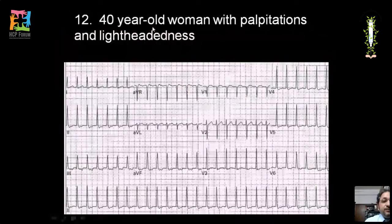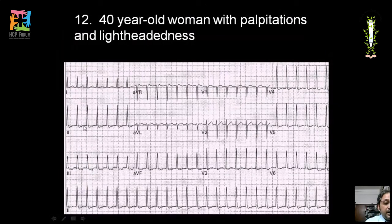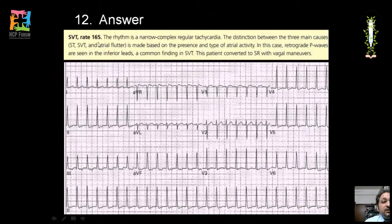A 50-year-old man with palpitation and lightheadedness shows a narrow complex regular tachycardia where P waves are either hidden or retrograde. There is no one-to-one relationship between P and QRS, ruling out sinus tachycardia. No atrial flutter waves are visible in inferior leads, but retrograde P waves are identified. The diagnosis is supraventricular tachycardia (SVT).